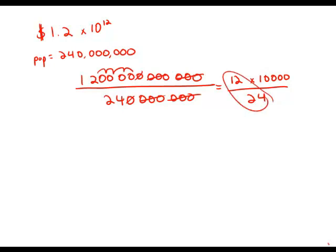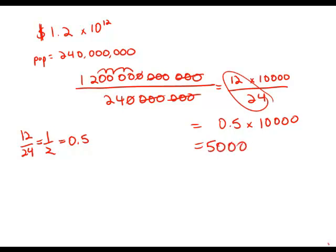Let's look at the 12 over 24. I know 12 over 24, of course that's 1 half. That's 0.5. So really what this is is 0.5 times 10,000 and that is 5,000. That is the per capita expenditure and that is answer choice E.